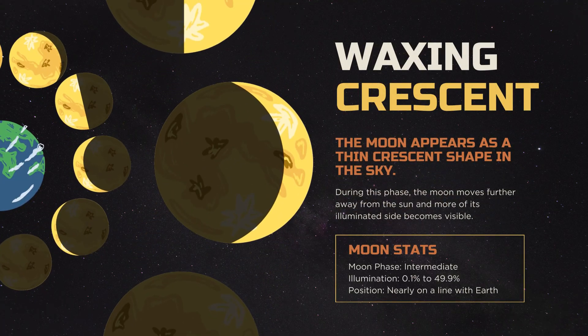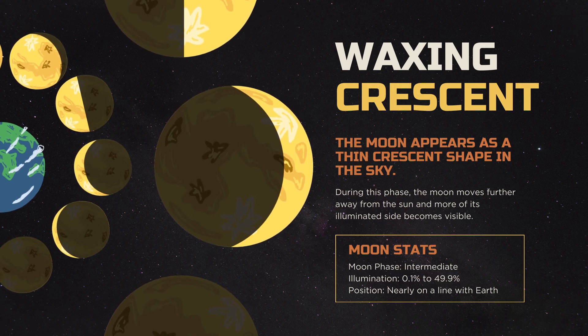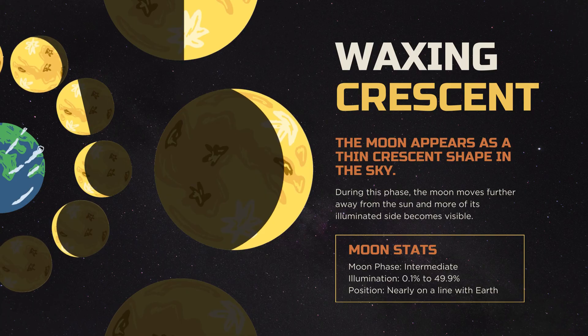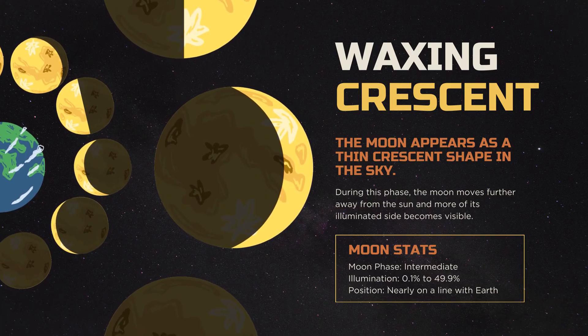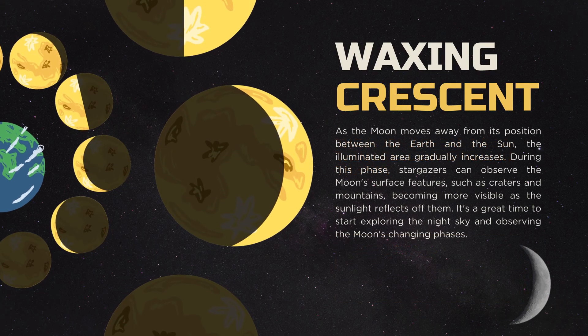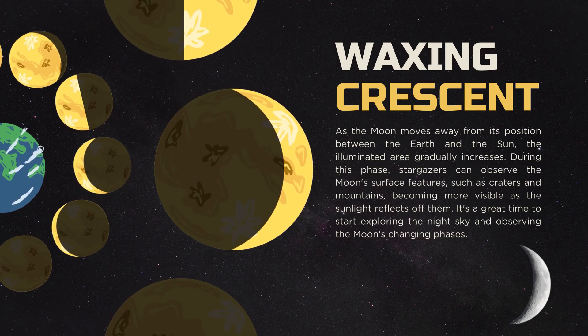As we transition into the waxing phase, the Moon seems to grow in the sky. This begins with the waxing crescent, where the Moon appears as a thin crescent shape. The Moon moves further away from the Sun and more of its illuminated side becomes visible. As the Moon moves away from its position between the Earth and the Sun, the illuminated area gradually increases.